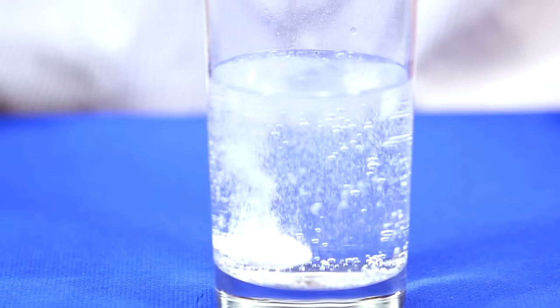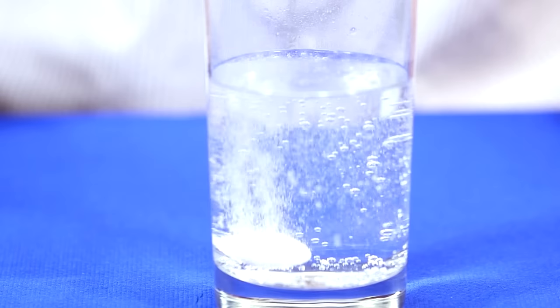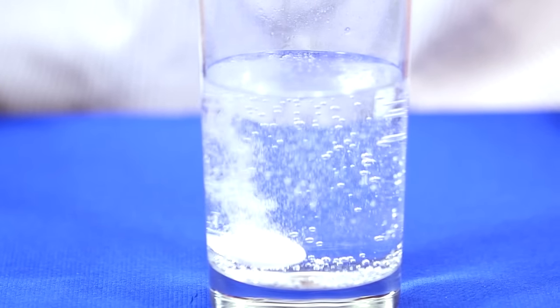But why does the carbon dioxide collect on the straw or the pipe cleaner or the glass for that matter? If you could look way down at the Mento and the other stuff we put in there, they're not really as smooth as they look.